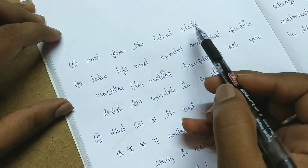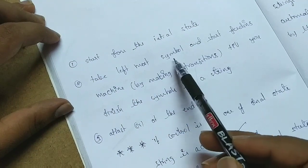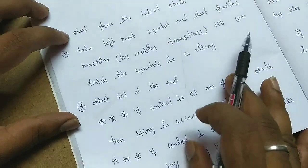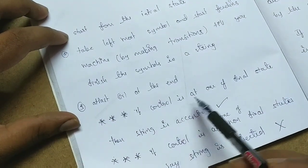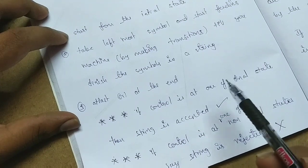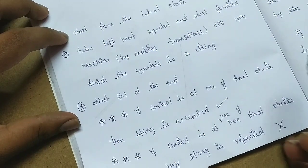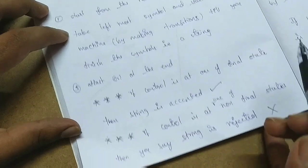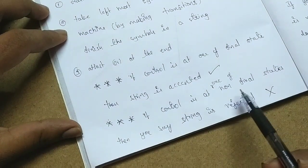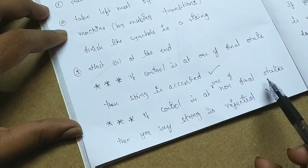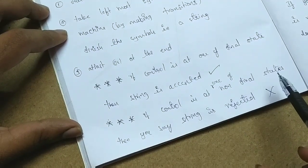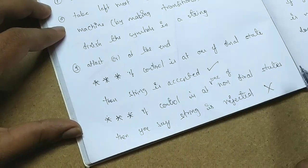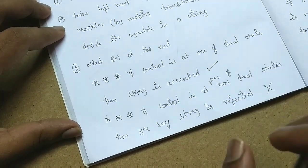Start from the initial state. Take the leftmost symbol from the string and feed it to the machine one by one. At the end, if the control remains at a final state — whether you have one or more than one final state — then the string is accepted by the finite automata. If you are not at one of the final states at the end of the transitions, then the string is rejected by the finite automata. This is string acceptance and rejection.